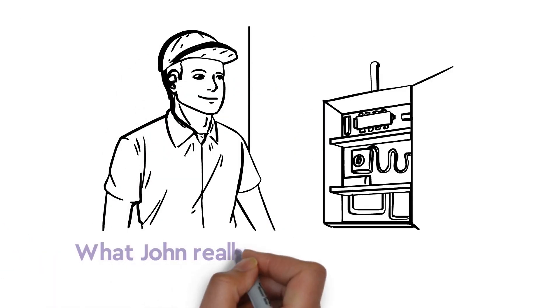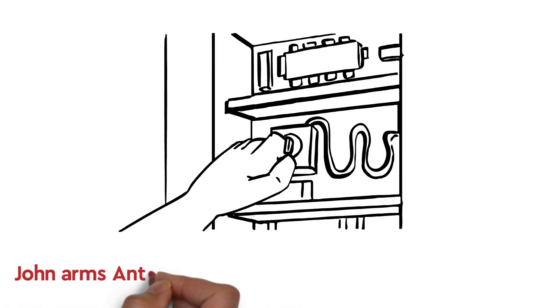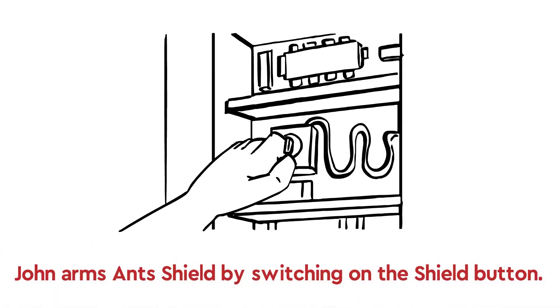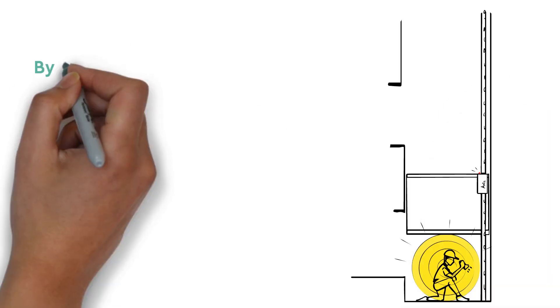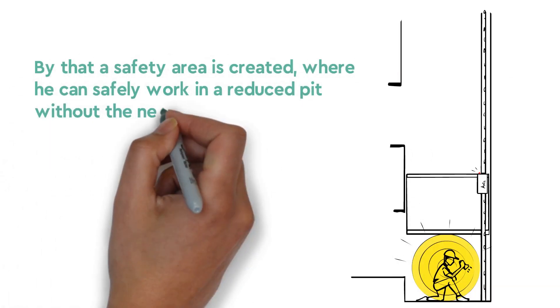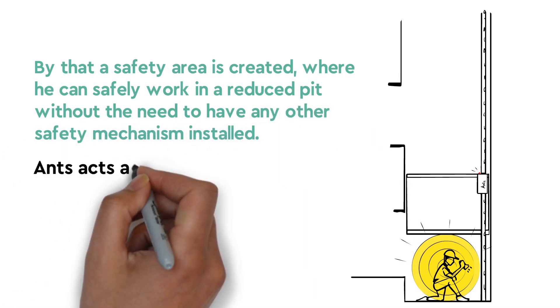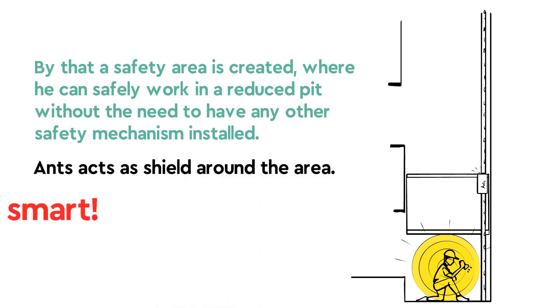What really fascinates John is that special feature Ant's Shield can provide. John arms Ant's Shield by switching on the shield button. By that, a safety area is created where he can safely work in a reduced pit without the need to have any other safety mechanism installed. ANT acts as a shield around the area. So smart!